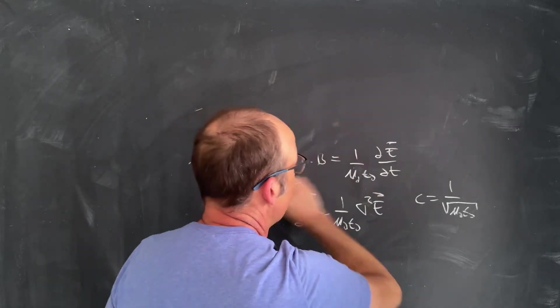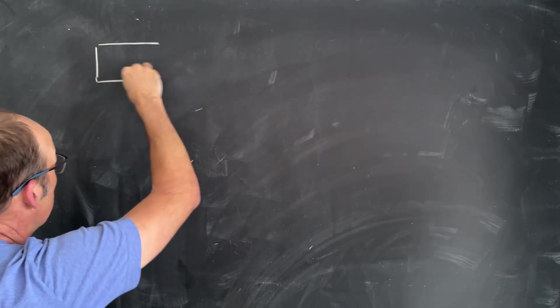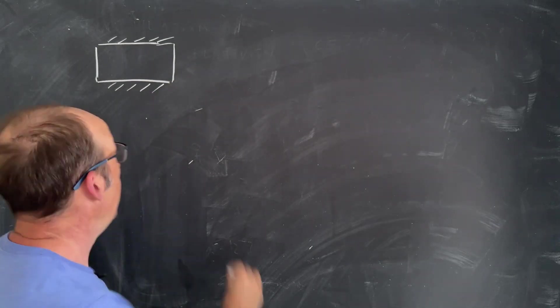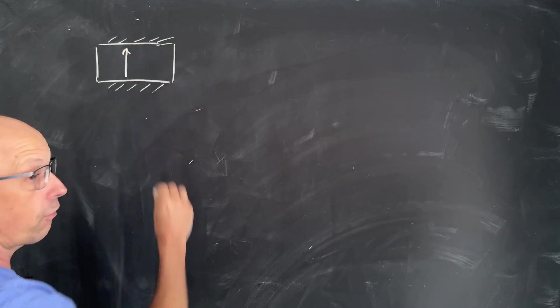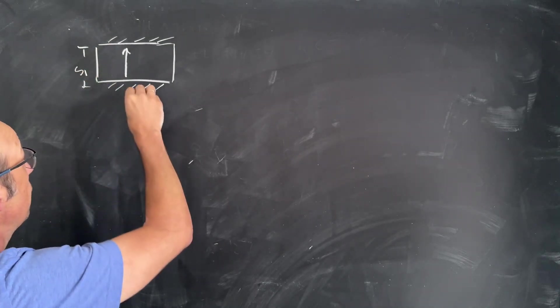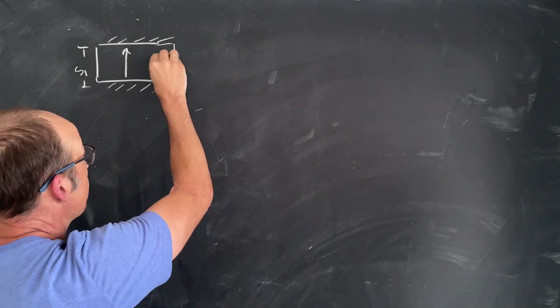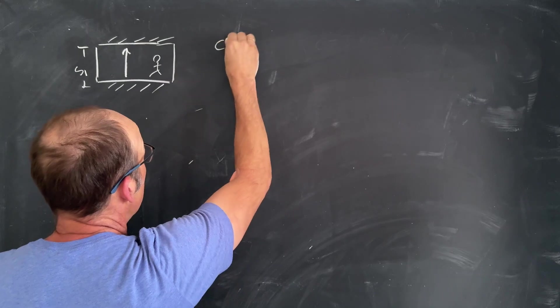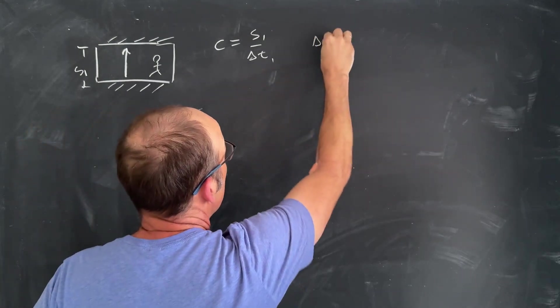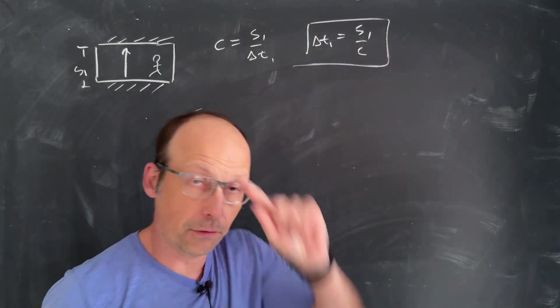Now, how can we use that to calculate time dilation? Suppose I have here a clock, and it doesn't look like a clock, but it is. Because this clock has a mirror on the top and the bottom. And my clock then shoots a beam of light across that. And let's say this has a distance of S1. I can say, how long would it take that beam to get across there? It's light. I'm in here, I'm measuring my clock. So I can say C is going to be S1 over delta T1. Delta T1 is going to be equal to S1 over C. That's the tick. That's my tick rate for reference frame one.